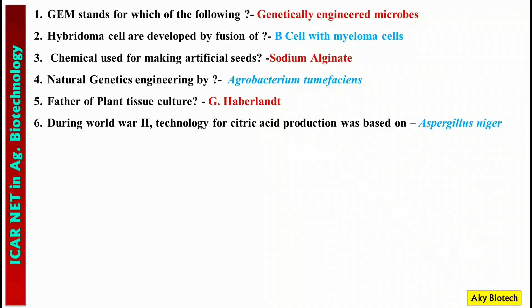Question 6: During World War II, the technology for citric acid production was based on which organism? The organism used was Aspergillus niger.